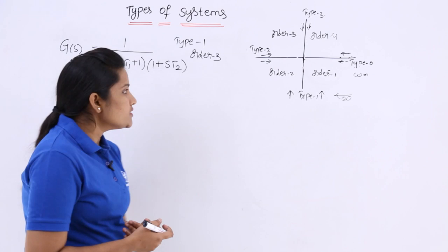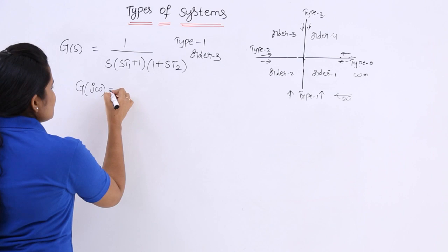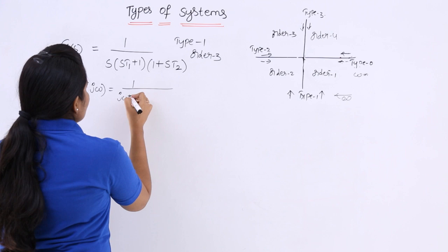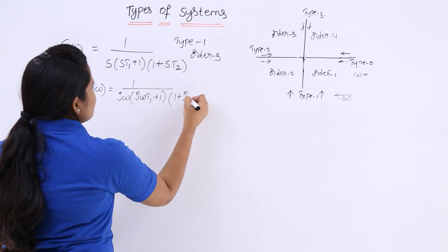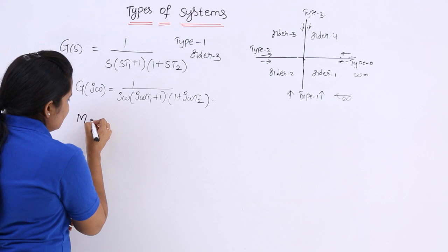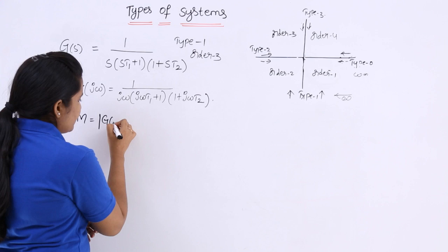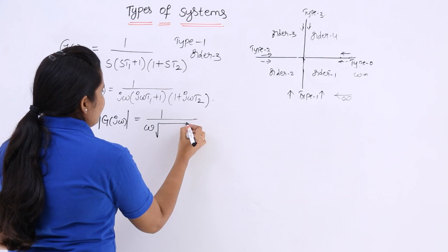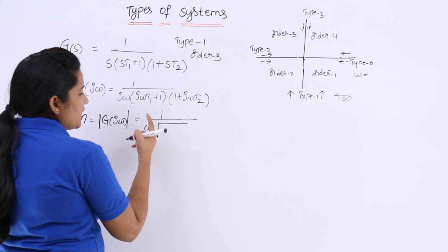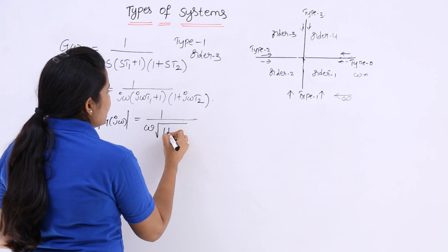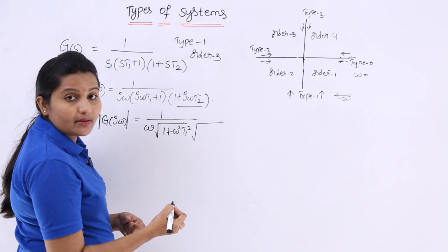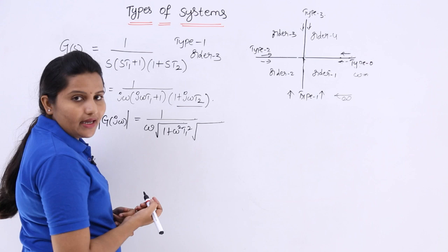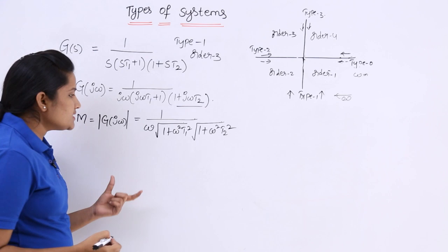Now we consider G(jω) by substituting jω in place of S: G(jω) = 1 / [jω(jωT1 + 1)(1 + jωT2)]. The magnitude is the modulus of G(jω), which equals 1 divided by [ω · √(1 + ω²T1²) · √(1 + ω²T2²)].